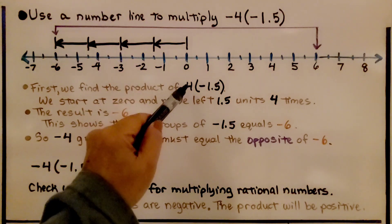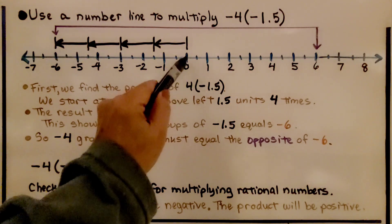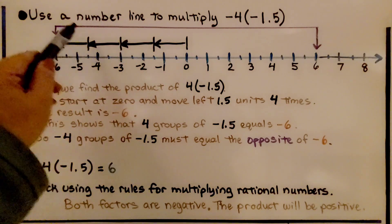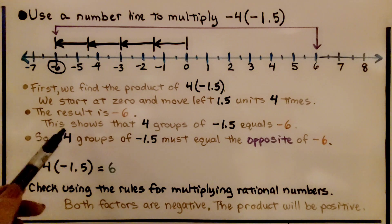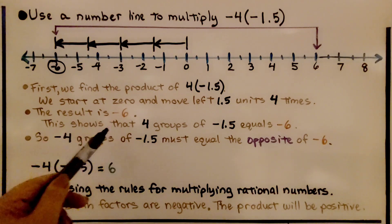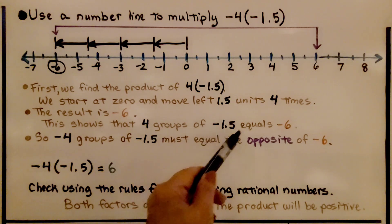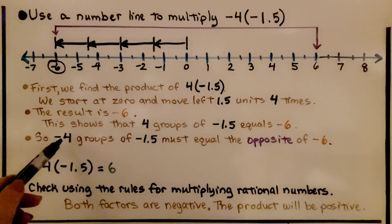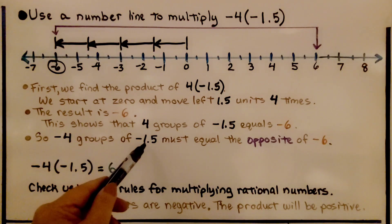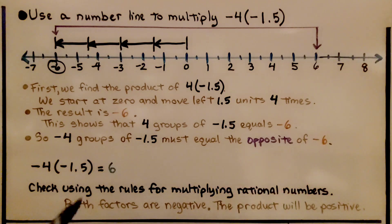We're starting with positive 4 times negative 1 and 5 tenths. We count 1, 2, 3, 4 jumps and land at negative 6. That's our result. This shows that positive 4 groups of negative 1 and 5 tenths equals negative 6.